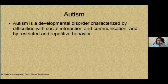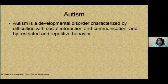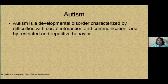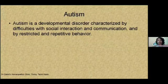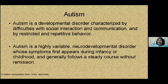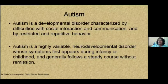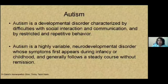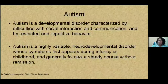I would like to give a small brief introduction. What is autism? Most of us know the symptoms. It is basically a developmental disorder characterized by difficulties of social interaction and communication. The child is not able to communicate properly, and the two other key points are restricted and repetitive behavior. Autism is a highly variable neurodevelopmental disorder — there is some problem in the development of the nervous system. It appears during infancy, childhood, or prenatally; pregnancy plays a huge role in that.